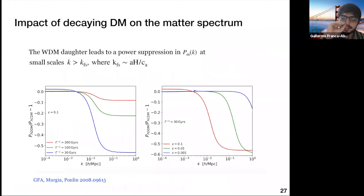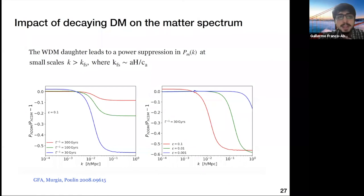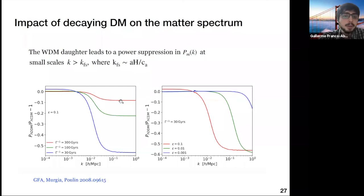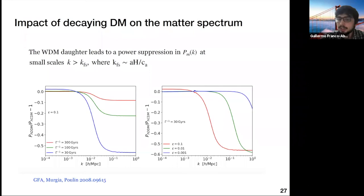Now we can examine the impact on the matter power spectrum. The main effect arises from the warm dark matter component: a suppression at small scales, specifically below the free-streaming scale. Showing residuals relative to Lambda CDM — varying γ at fixed ε and vice versa — we find that γ controls the depth of the suppression (how much warm dark matter is produced), while ε controls the cutoff scale (the free-streaming scale). Intermediate values of both γ and ε can provide precisely the suppression needed to explain the low observed value of S8.